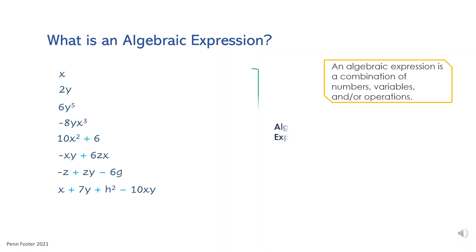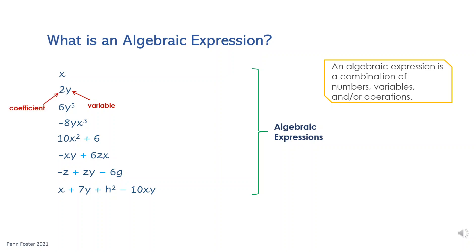Here are some examples. Letters are the variable part of the expression. A variable is called so because it can hold different values. A number that appears before the variable is called a coefficient. When a variable does not have a number before it, it's understood as 1. Also, variables without a power showing on top have a power of 1.